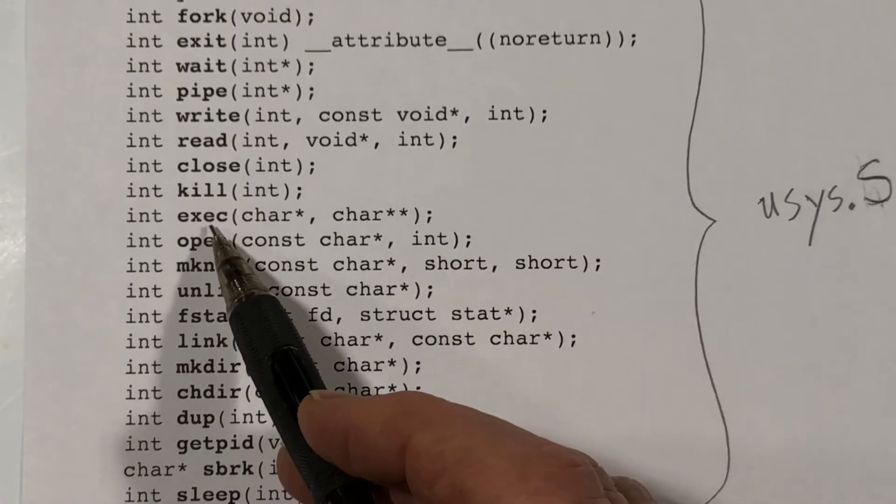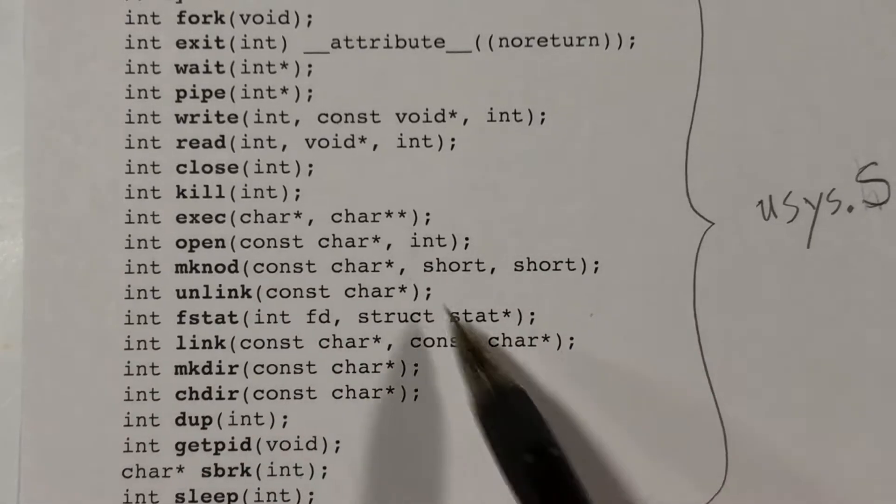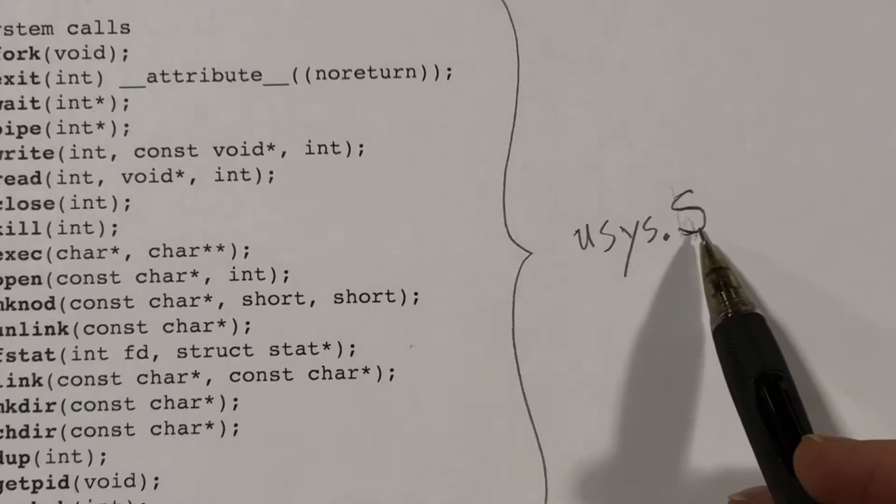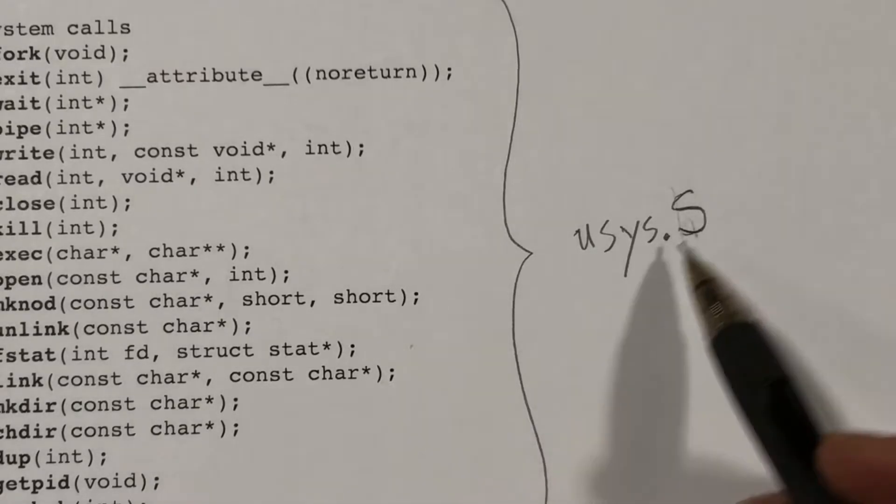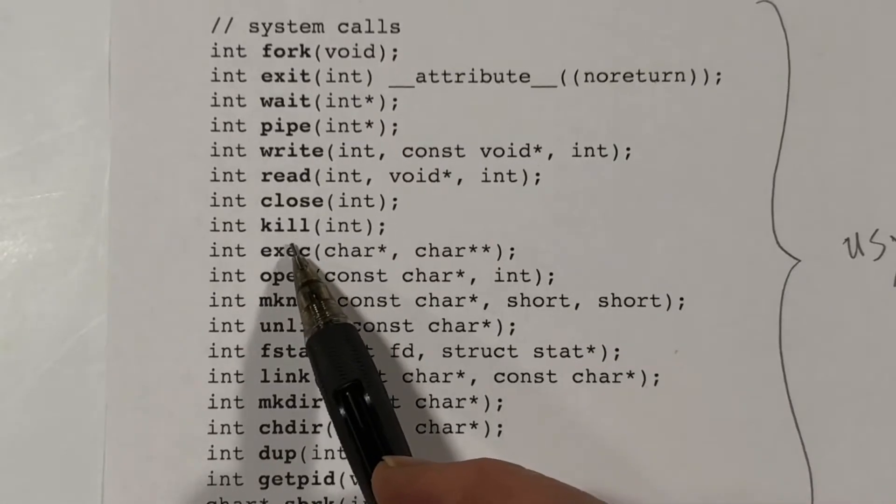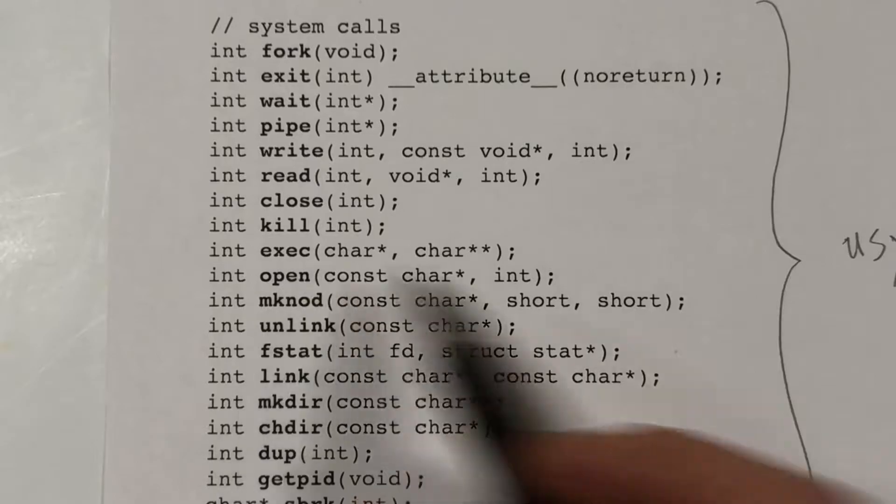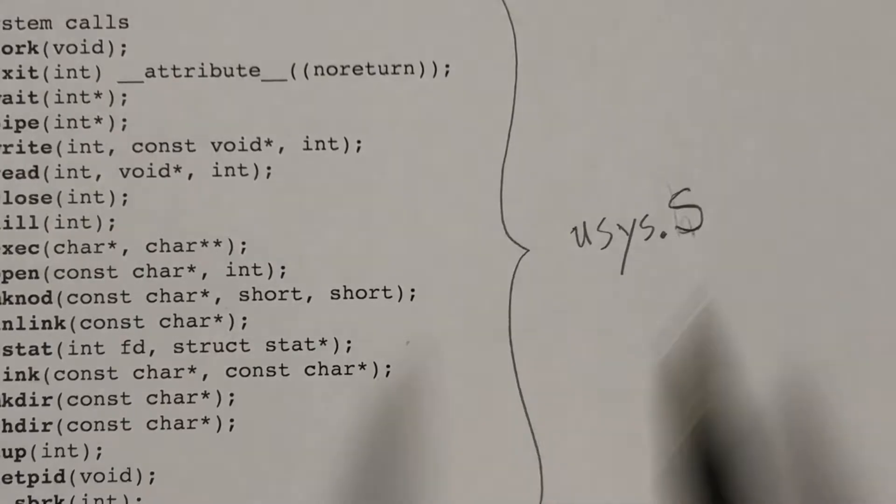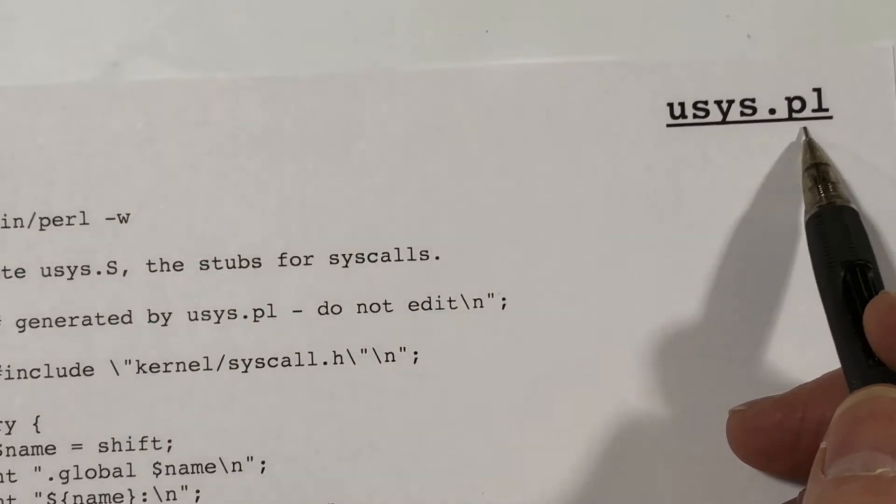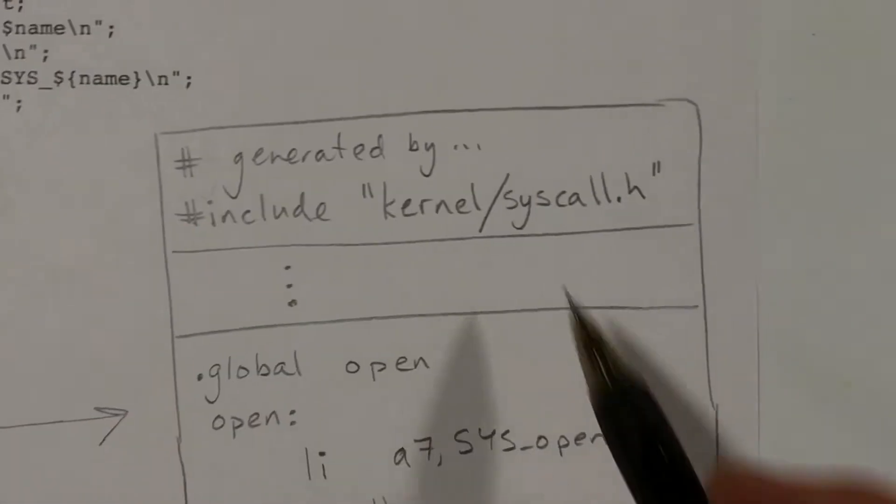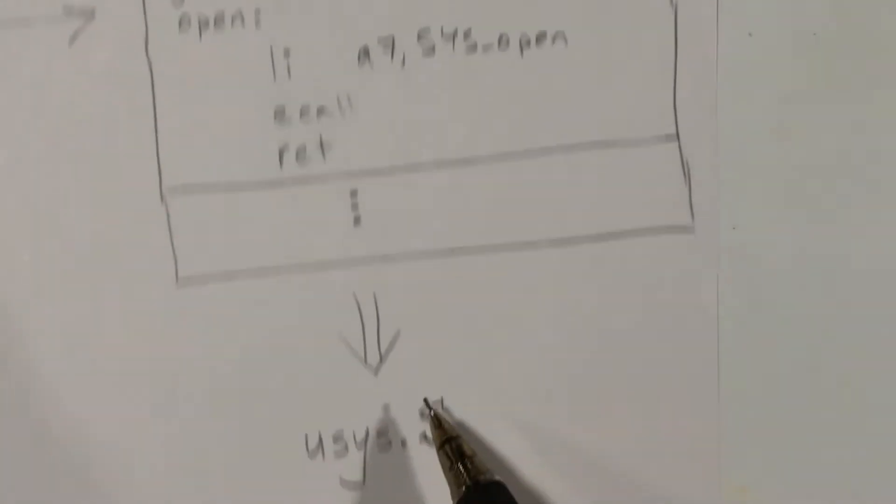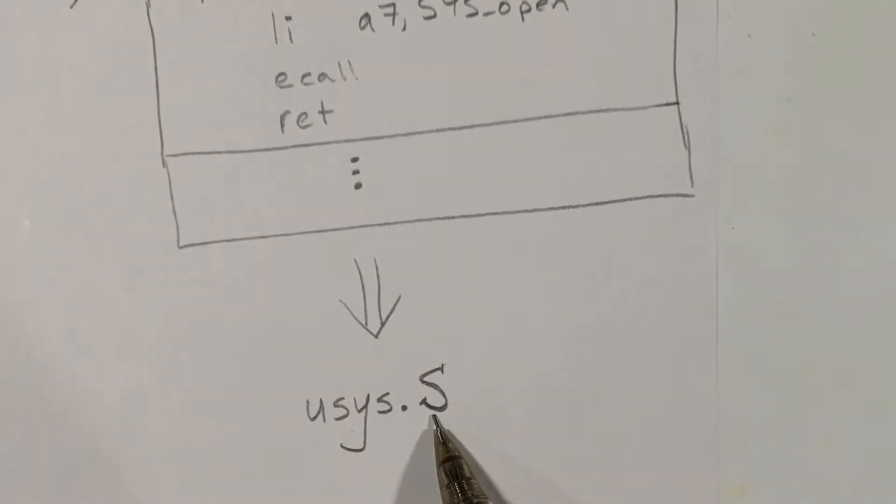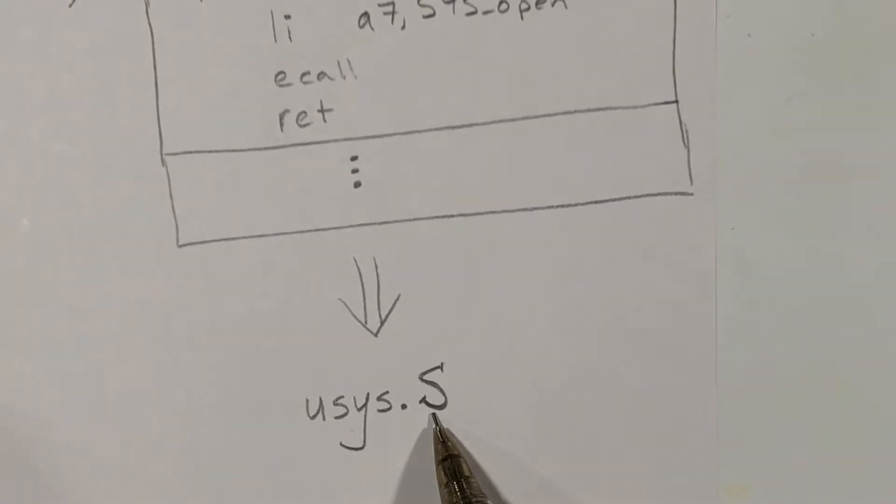There is a small function for each one of these, and these are all collected into one file called usys.s, which is an assembly language program. The function codes for each one of these functions that is in the assembly language is actually generated automatically by a Perl script, so let's take a look at that. So here we've got usys.pl, and this script is going to generate some assembly code, and here I'm showing what the assembly code has generated, and it goes into this file, usys.s, which will be assembled and linked with the program that we're compiling, like kill.c.